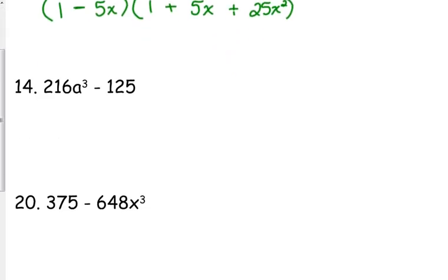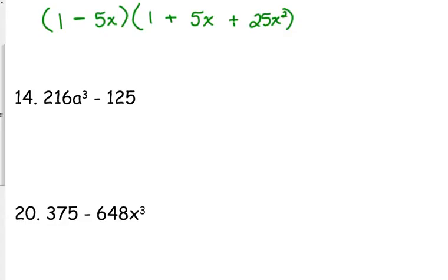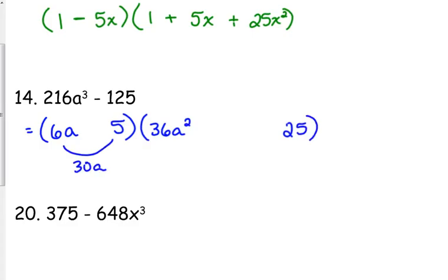Let's look at number 14. 216, 125, those are both perfect cubes. So, we can jump right in. 6a and 5. Square the 6a, you get 36a squared. Square the 5, you get 25. Multiply the 6a times 5 to get 30a. Same as negative, opposite is positive, last one is always positive. Yes, I sound like a broken record, but hopefully if I say it enough, it will stick, because people tend to forget these.